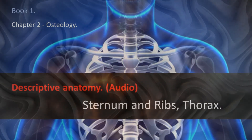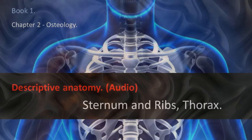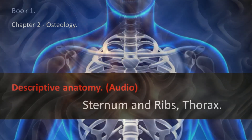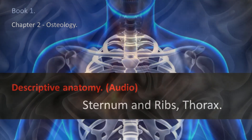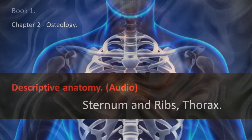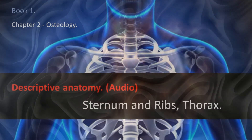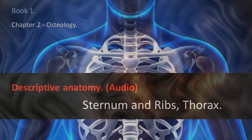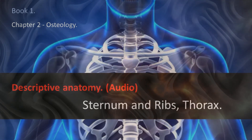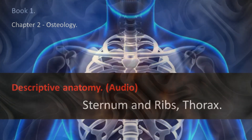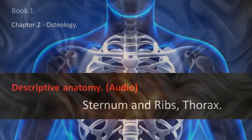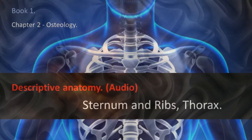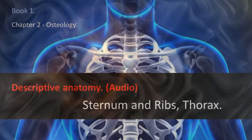2. Ribs and Costal Cartilages. The ribs are flat bones arranged in an arc between the spine and the sternum. There are 24 of them, 12 on each side, designated first, second, third, etc., counted from top to bottom. The first seven articulate with the sternum and are called sternal or true ribs. The last five, without direct relation to the sternum, are called asternal or false ribs. The last two false ones, free throughout their entire length, are called floating ribs.